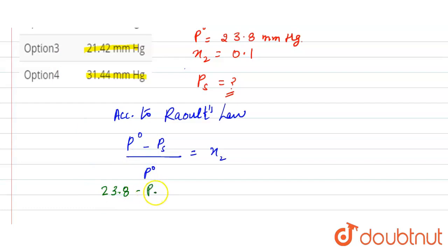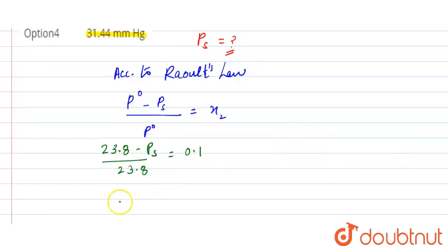minus Ps, which we need to calculate, divided by 23.8, equals 0.1. From here, Ps = 21.42 mm Hg.